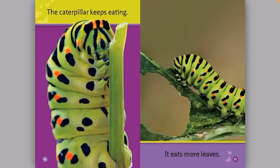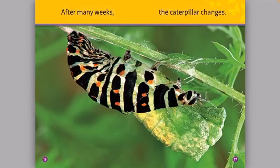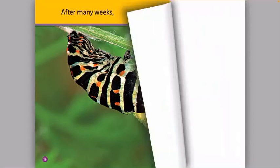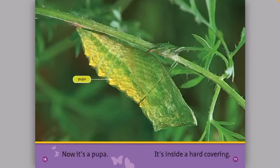The caterpillar keeps eating. It eats more leaves. After many weeks, the caterpillar changes. Now it's a pupa. It's inside a hard covering.